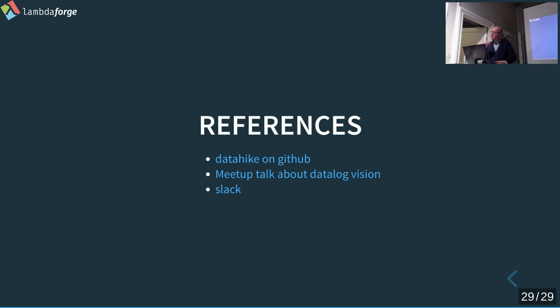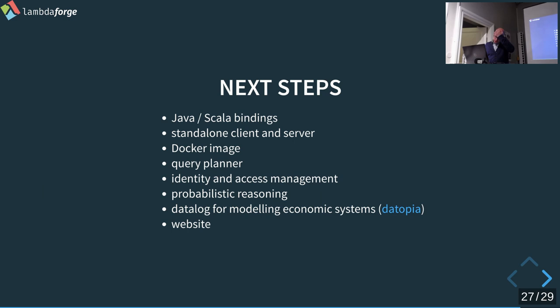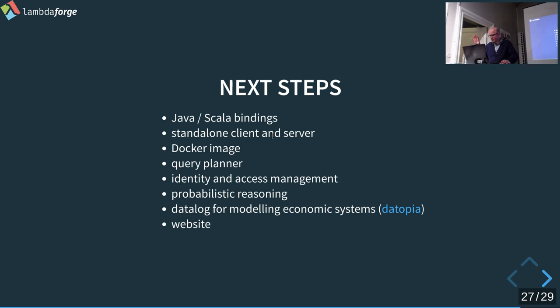Question about production maturity and stability. The key part for stability is the standalone client and server we want to build. Right now everything is in your application — only the storage is an external layer like Postgres or S3. If your application fails, DataHike fails too. That's why we want a standalone server you can start and run separately.